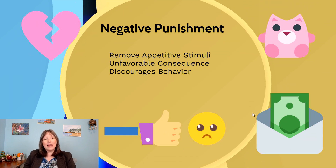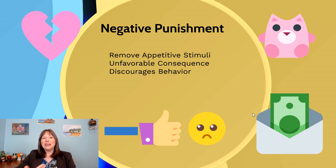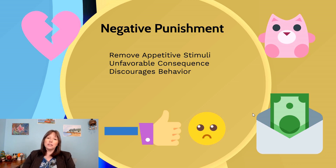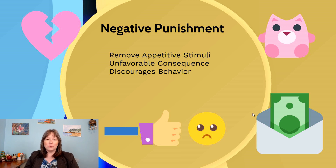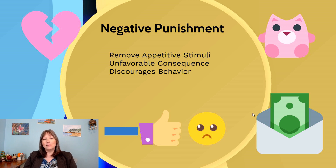Negative punishment is when we remove something good, which makes us sad. We can punish someone by adding something they dislike, or by taking away something they do like. Removing an appetitive stimulus — such as taking away a child's toy if they're misbehaving, ending a play date early, or issuing a fine that removes money — constitutes negative punishment. Even harsher forms involve removing intangible things like love, approval, or acceptance. The goal is an unfavorable consequence that discourages the behavior and makes it less frequent.